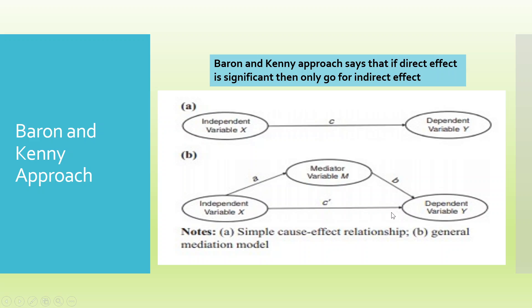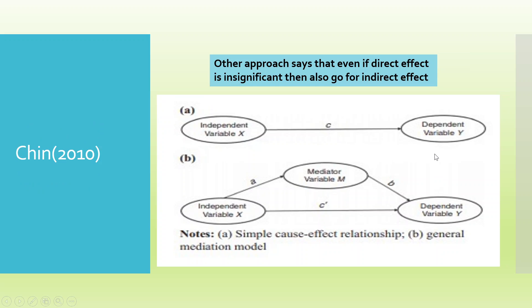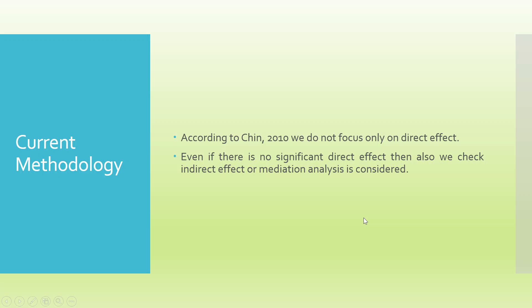Baron and Kenny conducted studies in 1986 and according to them, if the direct effect C is significant, then only go for the indirect effect. If the direct effect is insignificant, you should not even calculate the indirect effect. However, this approach was largely criticized by Professor Hair, Professor Hayes, and Professor Cheen, who argued that even if the direct effect is insignificant, you should still estimate the indirect effect. According to Cheen 2010, mediation analysis should be considered regardless of the direct effect's significance. This is the current methodology to be adopted.